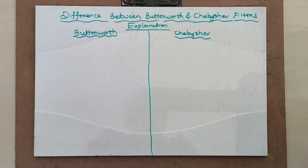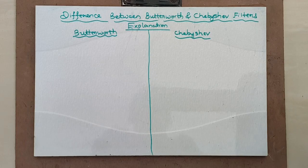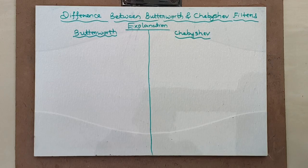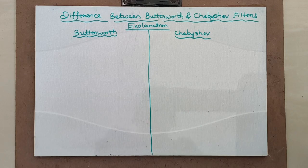Hello students. Today we will discuss a small theory portion which is important from an exam point of view. That is the difference between Butterworth and Chebyshev filters, as well as the difference between analog and digital filters. We have already covered Butterworth filters in assignment 1 and Chebyshev filters in assignment 2. Today we will discuss the differences between them.